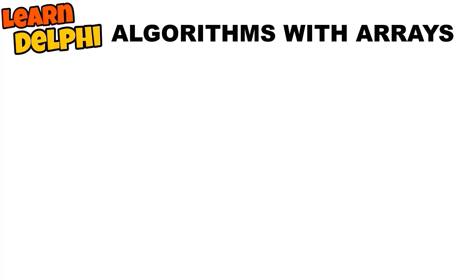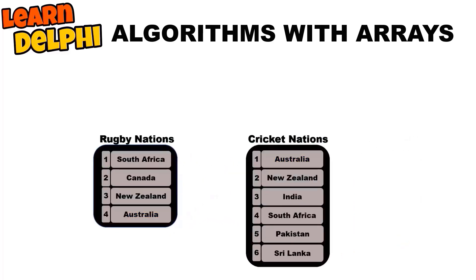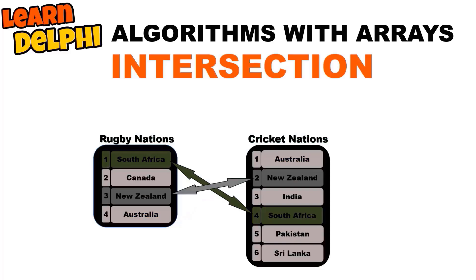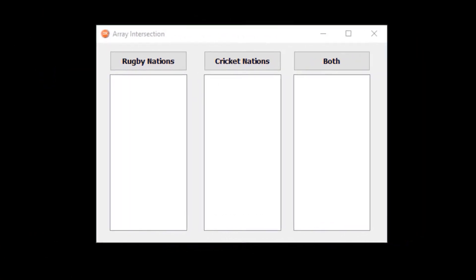In this video we will take arrays to the next level. In the next few tutorials I will show you how to write algorithms to perform different operations with arrays. Today you will see how to find duplicate items that appear in two different arrays — this is called intersection. I will demonstrate array intersection with this project that you can program with me.